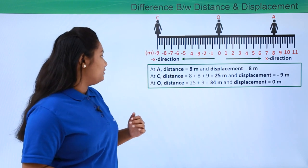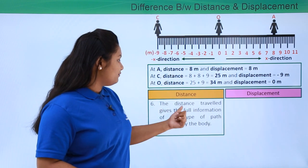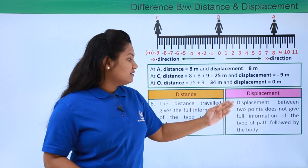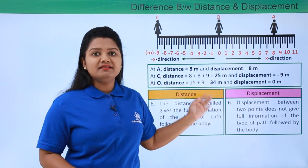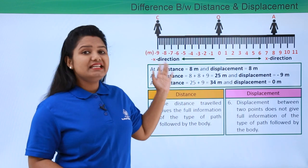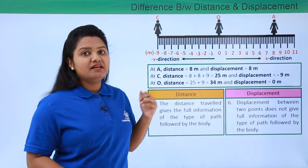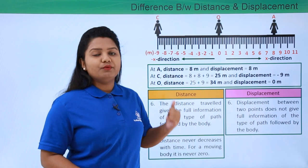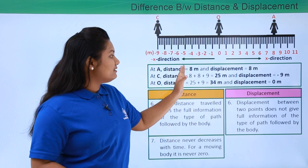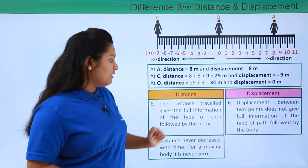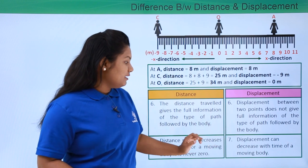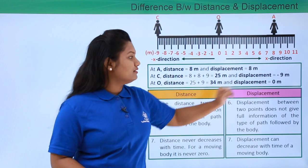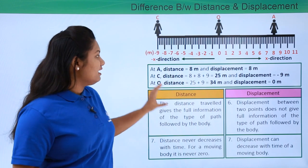We can figure out some more points. The distance travelled gives the full information of the type of path followed by the body, whereas the displacement between two points does not give the full information of the path but gives information only about the initial and the final positions of the body. Also, the distance never decreases with time for a moving body. As we can see, distance has never decreased but increased with time. But in case of displacement, it can decrease with time — first it was eight meters, then minus nine, then zero.